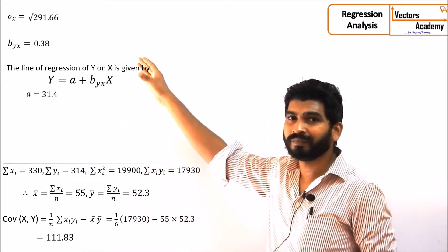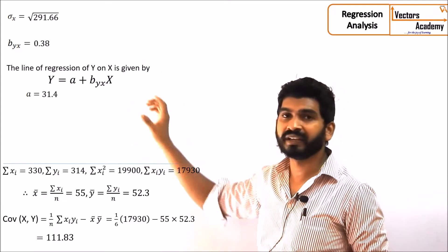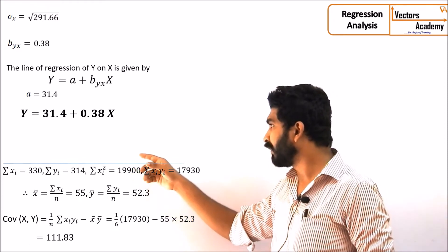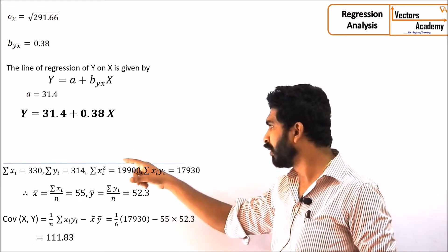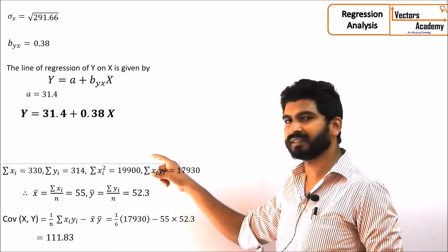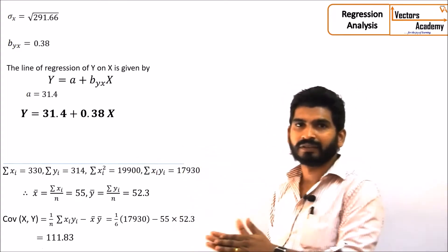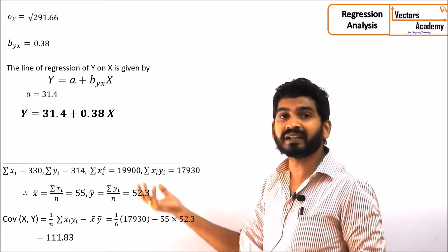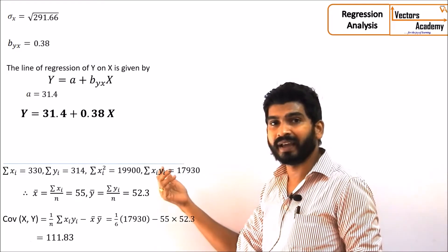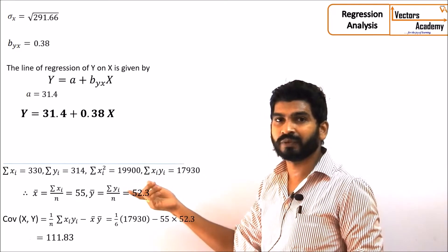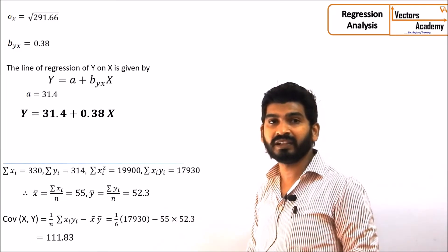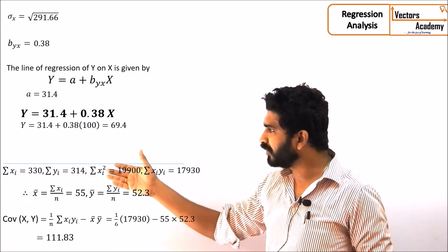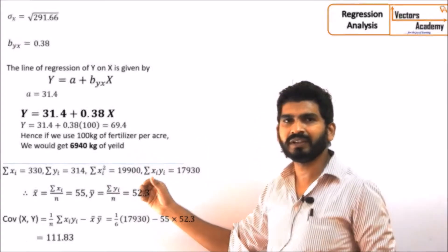Once we know the values of a and b, we can find out the regression equation. The regression equation comes out to be y = 31.4 + 0.38x. This is the linear regression equation. By this equation, we can predict the values of y, that is the yield, if we know the values of x. For example, if I need to find out the yield when using 100 kgs of fertilizer per acre, I substitute x = 100 and get the required yield value.